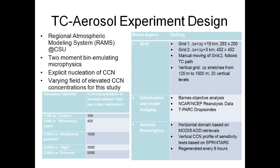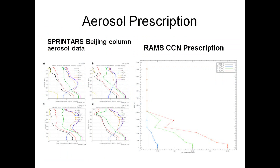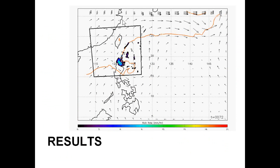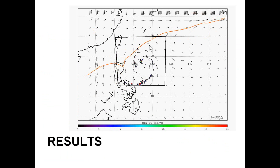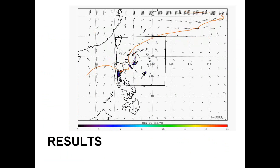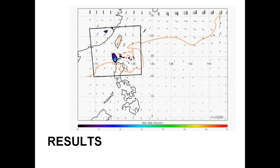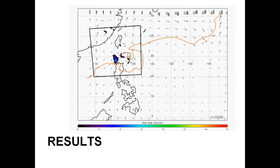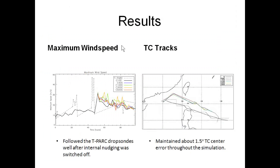These are the aerosol profiles inferred from the satellite data, showing the different concentrations. This is a case off the Asian coast — here's the storm. This is a pollution frontal boundary, and the storm is sweeping the aerosol into itself, wrapping it around right into the core of the storm. So we've got this pollution aerosol boundary entering the storm system.